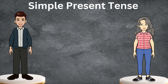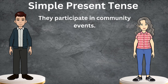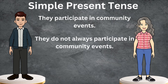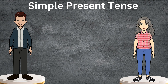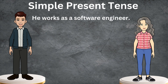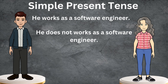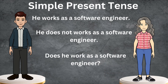New sentence: they participate in community events. The negative sentence would be: they do not always participate in community events. Or the interrogative one would be: do they participate in community events? Our next sentence is: he works as a software engineer. The negative sentence would be: he does not work as a software engineer. Or the interrogative one would be: does he work as a software engineer?